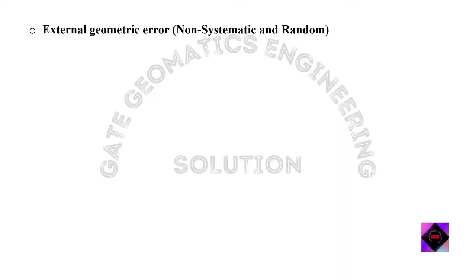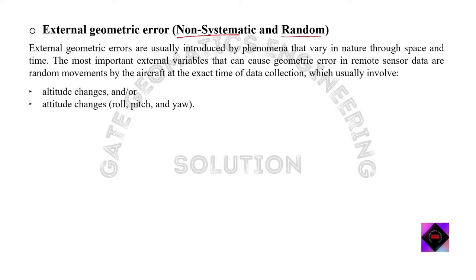Next, we move to external geometric error — it is non-systematic and random. External geometric errors are introduced by phenomena that vary in nature through space and time. The most important external variable causing geometric error is the random movement of the aircraft at the time of data collection. It involves attitude changes, meaning height variation and roll, pitch, and yaw.